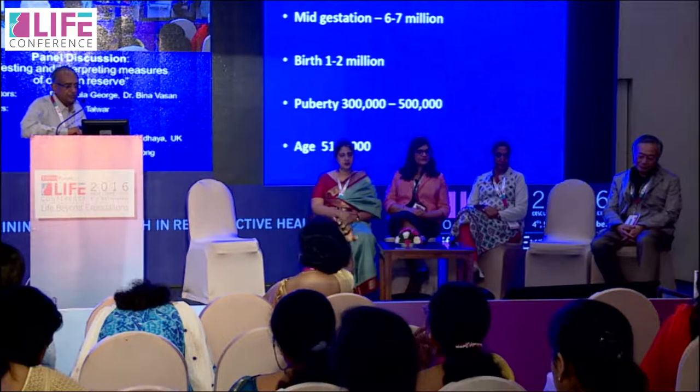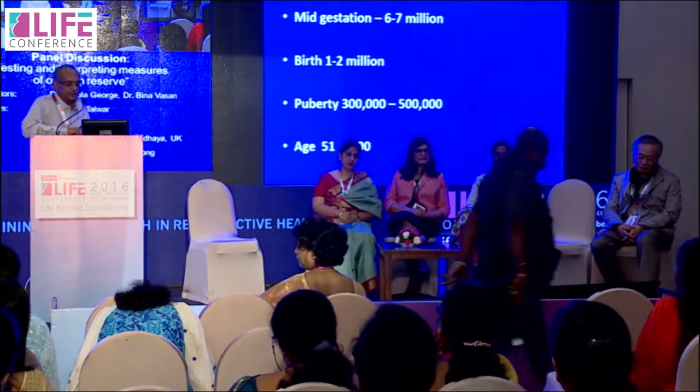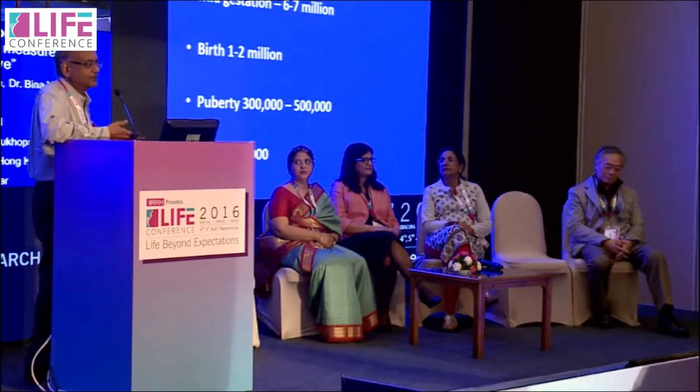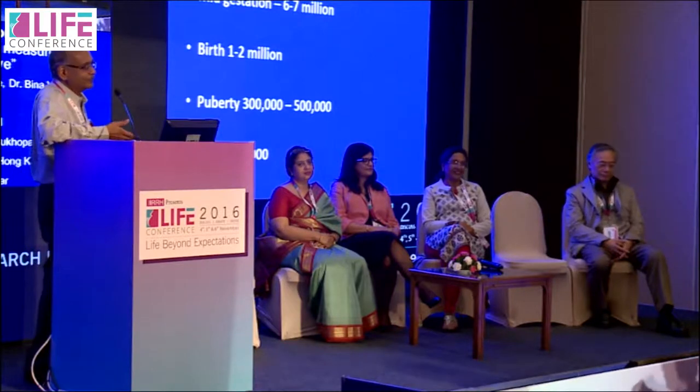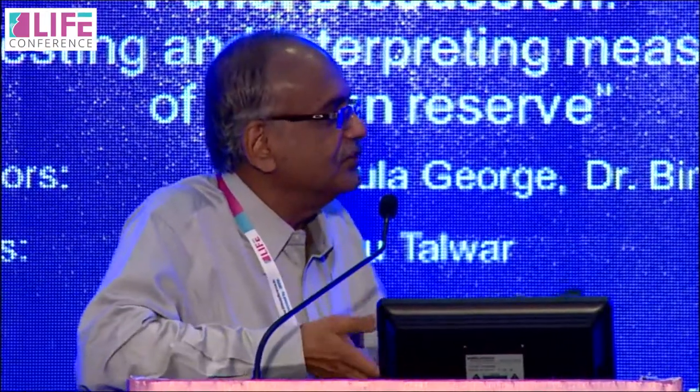When you consider oocyte numbers: in mid-gestation it's around six to seven million, at birth around one to two million, at puberty around three hundred thousand to five hundred thousand, and it comes down to around one thousand. Now, what exactly do you mean by diminished ovarian reserve? There is no strict criterion for what is considered diminished — it may mean the reserve is not adequate for usual means of achieving what the ovarian reserve is intended for.